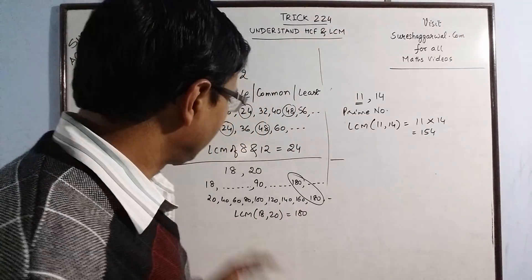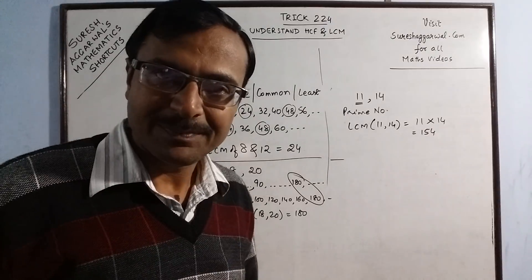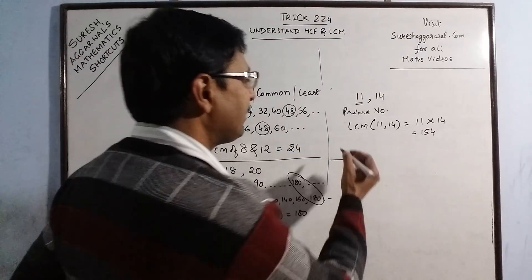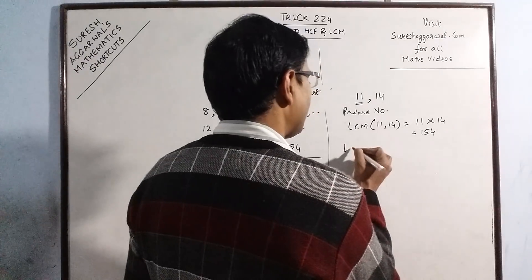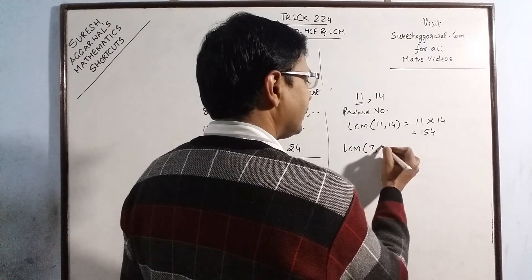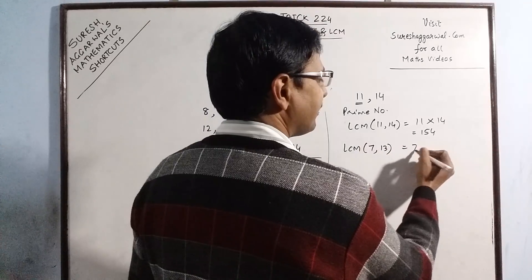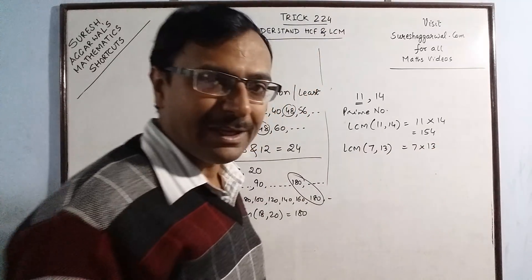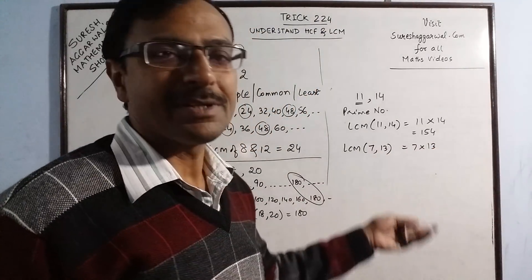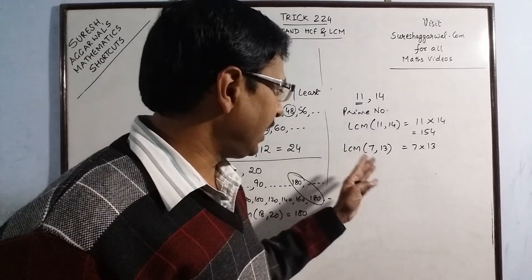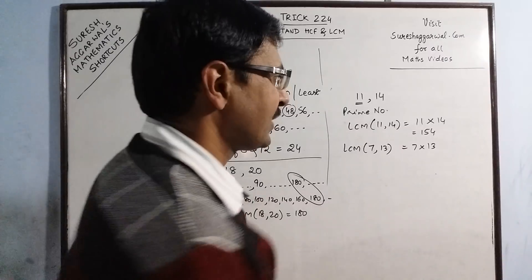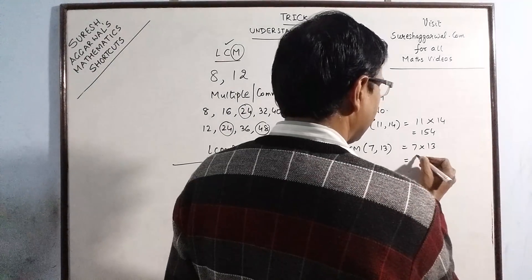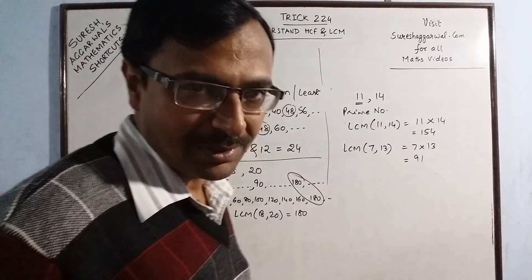Don't need to write the multiples of all these things. Now suppose both the numbers are prime, then our job is further simplified. LCM of 7 and 13 is just 7 into 13 because there cannot be any common multiples between 7 and 13 except the product of these two numbers. So 7 into 13 is 91 which is our answer.